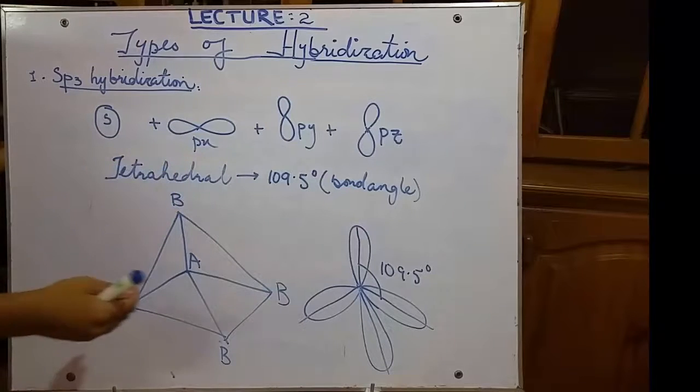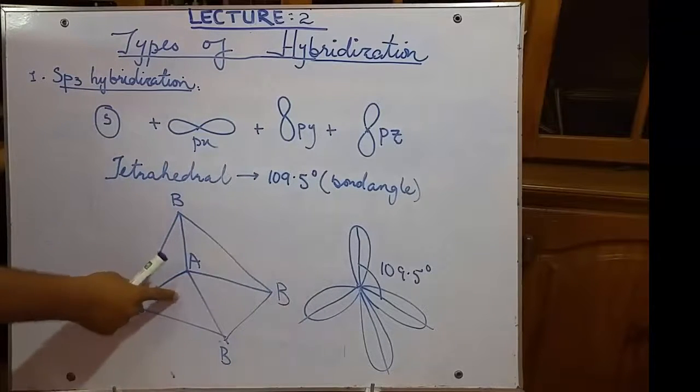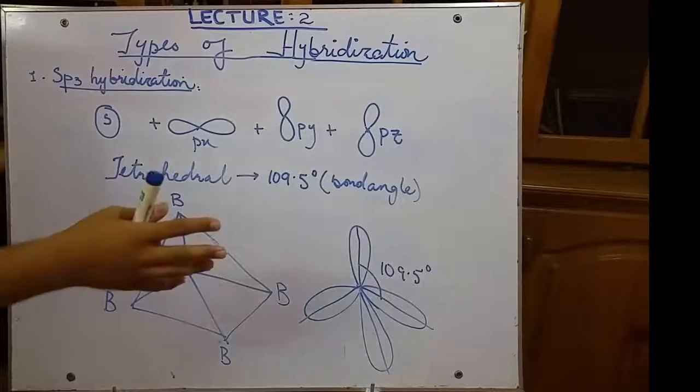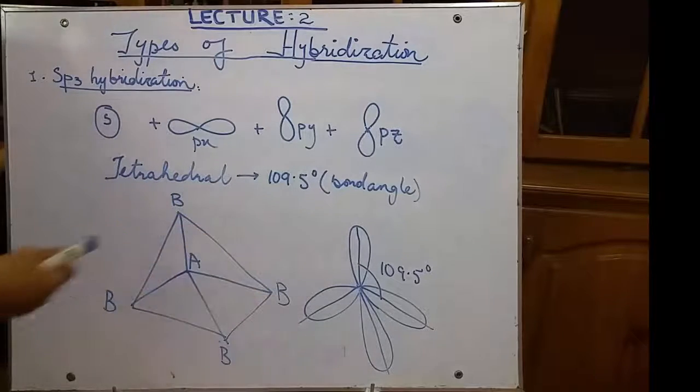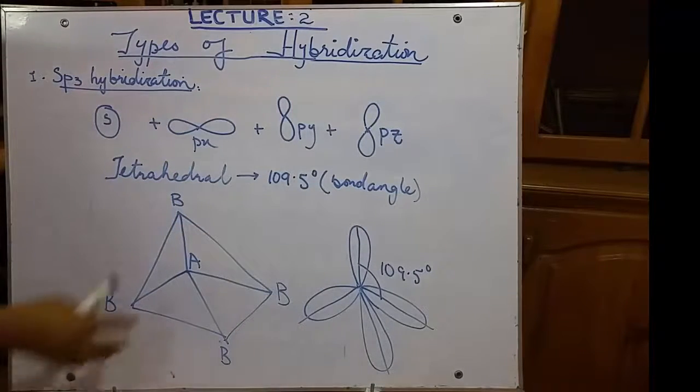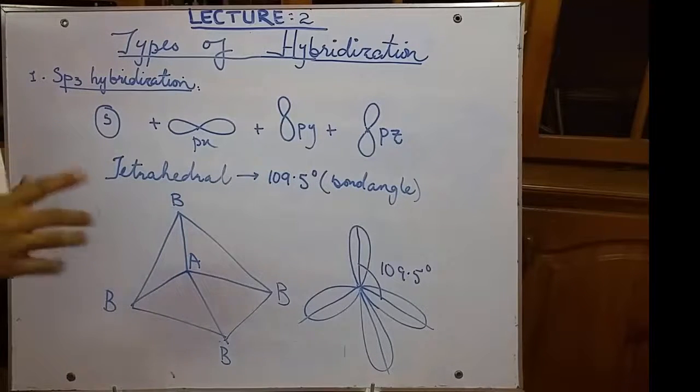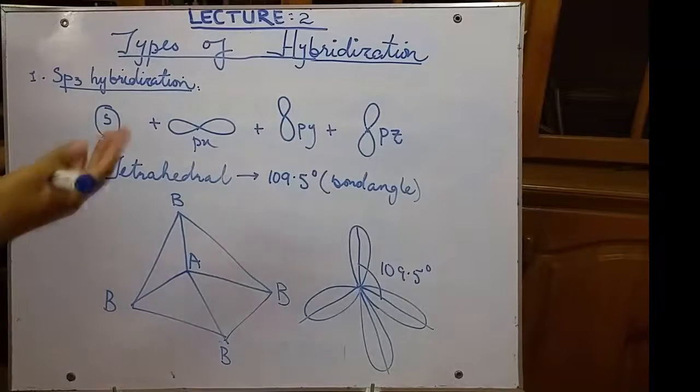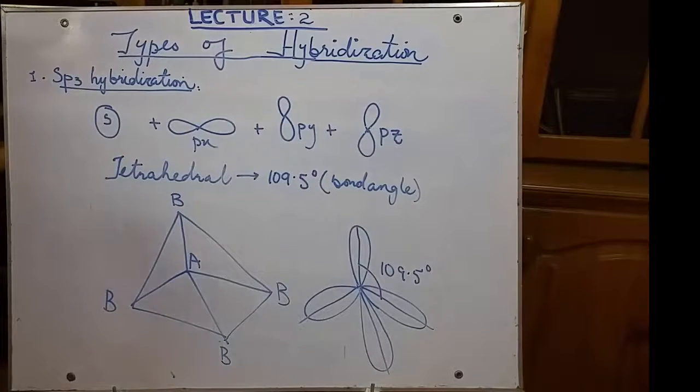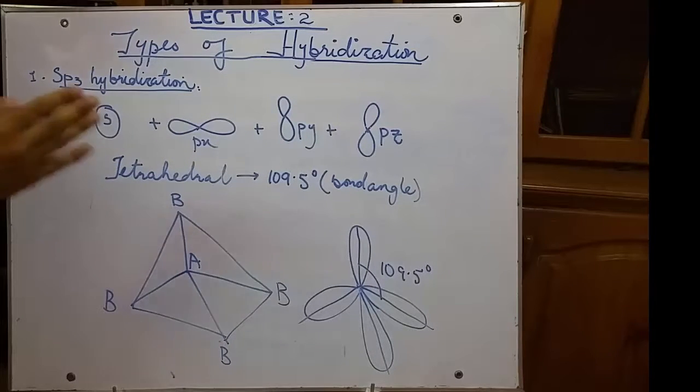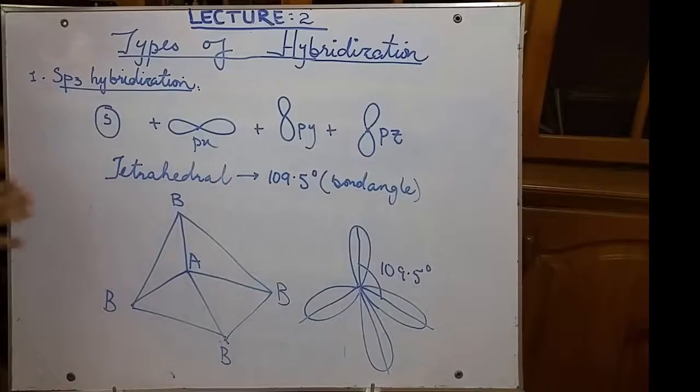As you can see, I have drawn two diagrams. One is of the covalent bonding that is easier to understand. Another one is of the hybrid orbital theory. A suggests the central atom. What is the central atom? It will be discussed in the later lecture in which we will be discussing how to identify which compound undergoes what type of hybridization.